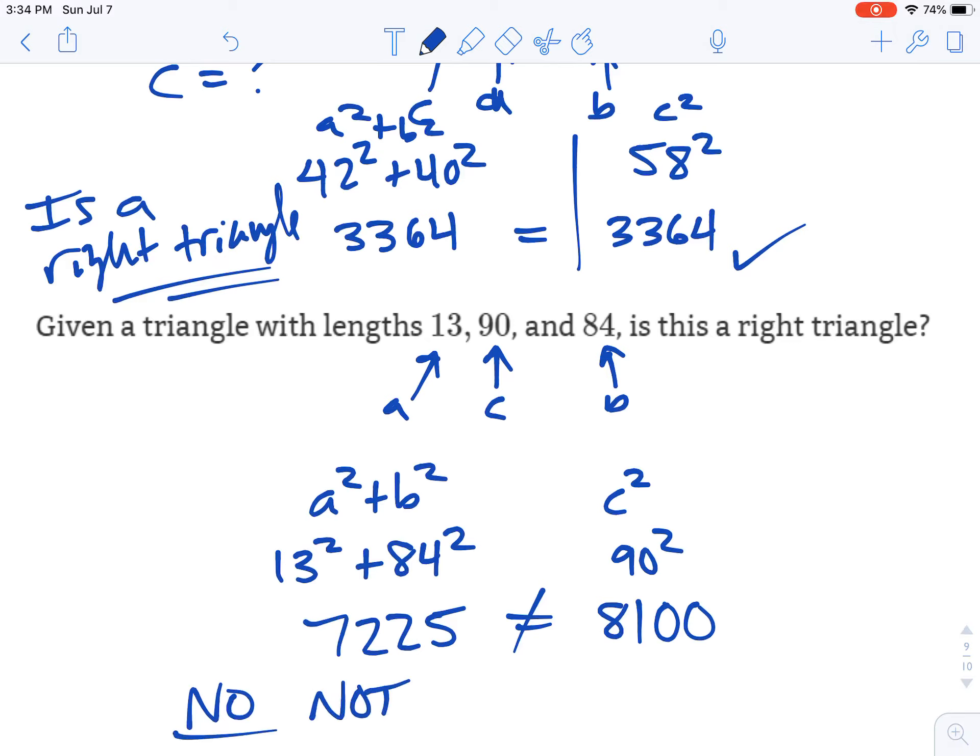So no, not a right triangle. It has to be equal, a squared plus b squared, it has to equal c squared in order to be a right triangle. So this would not be since it does not follow that rule.